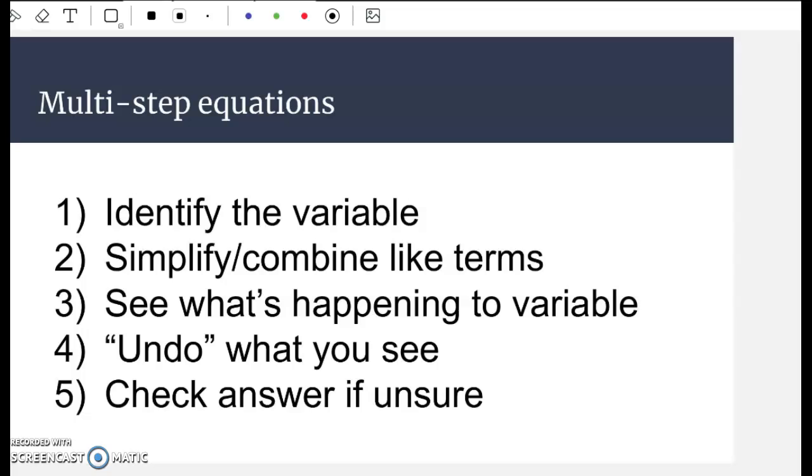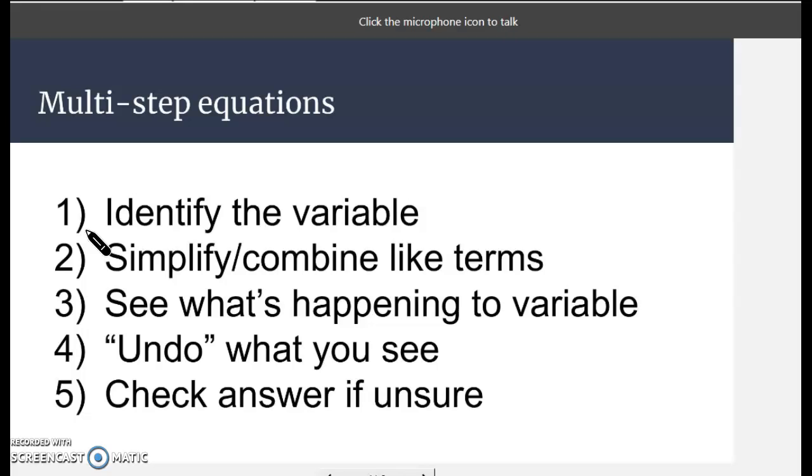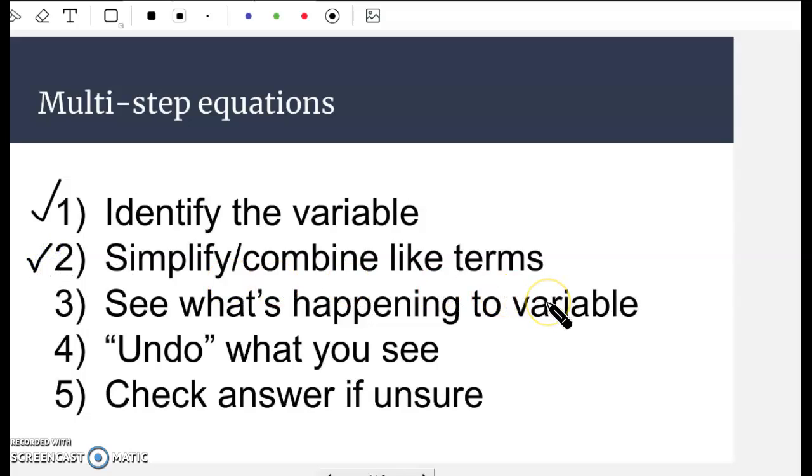Welcome back everybody. Today we are going to be talking about solving multi-step equations, but this time they'll have variables on both sides. These five steps here are general guidelines for solving those problems, particularly with these types. Step two is about simplifying, combining like terms, getting all the variables to one side of an equation and then numbers to the other. Then once again we see what's happening to the variable, we undo what we see, and then we check the answer if unsure.